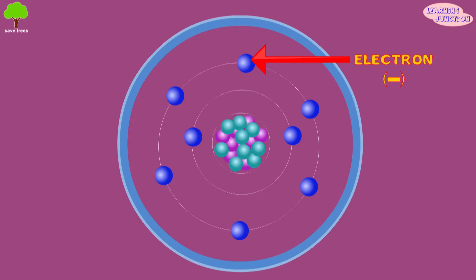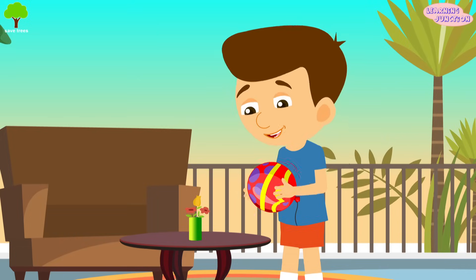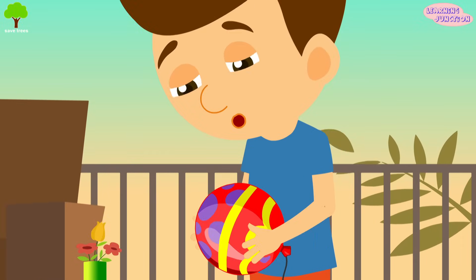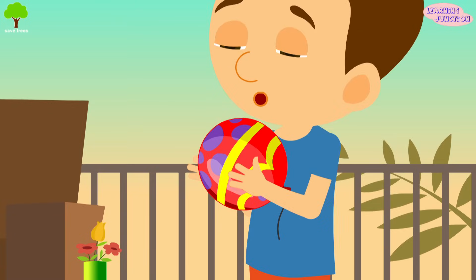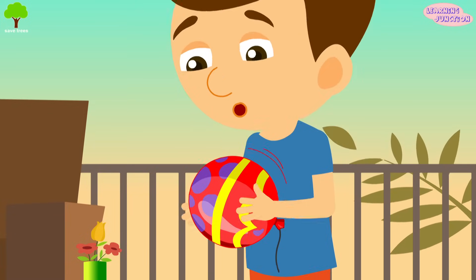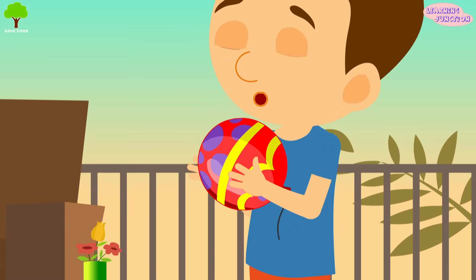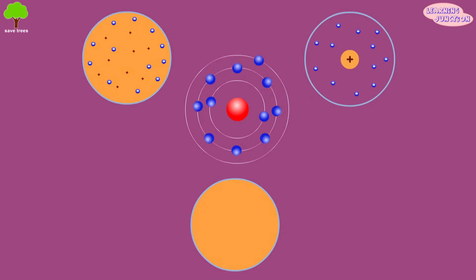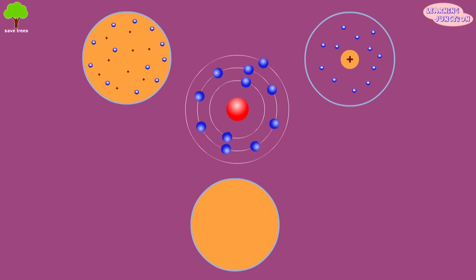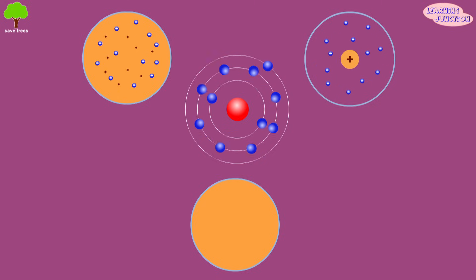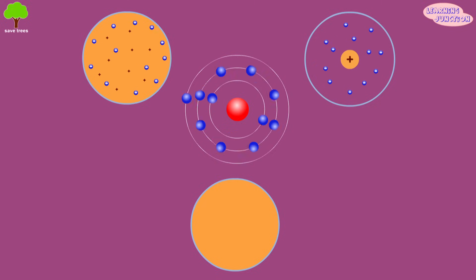Atoms contain even tinier particles known as electrons that carry a minus or negative electrical charge. Electrons orbit a positively charged nucleus. The surface of some objects, such as balloons, steal electrons from other surfaces, and the extra electrons make them negatively charged. When electrons build up with no circuit for them to flow along, they create non-moving or static electricity.